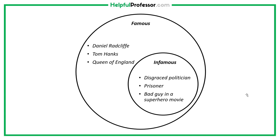Infamous people might be disgraced politicians, prisoners, or bad guys in a superhero movie. These people are famous, but they're also infamous because they're famous for a bad reason.